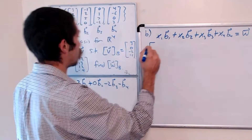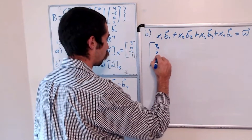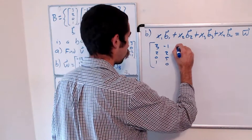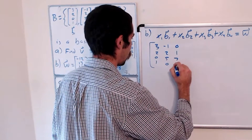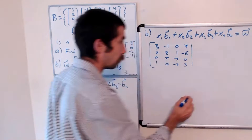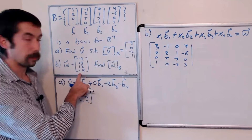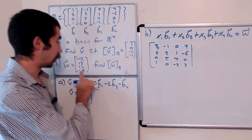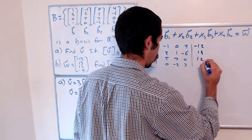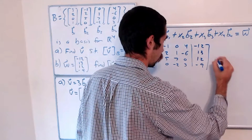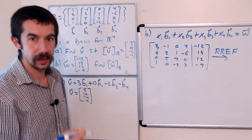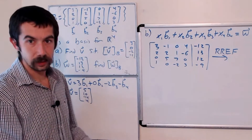So that matrix will look like this: the basis vectors form the first four columns — entries 3, 2, 0, 1 in the first column; -1, 2, 5, 0 in the second; 0, 1, 7, -2 in the third; 4, -6, 0, 3 in the fourth — with a vertical line, and then we put the vector W: [-12, 13, 12, -9] on the right side. Then we're going to row reduce into reduced row echelon form, and this will help us get our B coordinate vector for W.